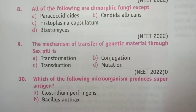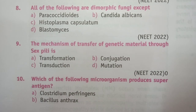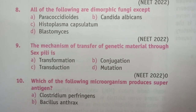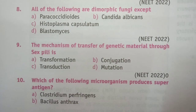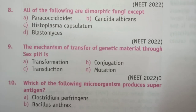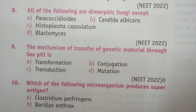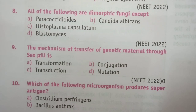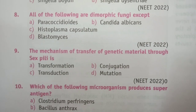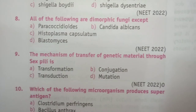Question 10: Which of the following microorganisms produces a superantigen? Clostridium perfringens, Bacillus anthracis, Staph aureus, or E. coli. The answer is C, Staph aureus. Staph aureus produces superantigen.